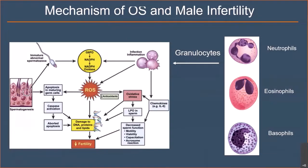In this slide, I would like to explain the mechanism of oxidative stress associated with male infertility. White blood cells are the main contributors of reactive oxygen species, resulting in inflammation or infection, the release of cytokines, and generation of reactive oxygen species. Another source is the production of abnormal sperm during spermatogenesis, which contain the cytoplasmic droplet, resulting in altered glucose-6-phosphate dehydrogenase and increased production of reactive oxygen species. Also, apoptosis during spermatogenesis triggers caspase activation, resulting in abortive apoptosis — all contributing to DNA damage, protein and lipid damage, altered sperm function, and male infertility.